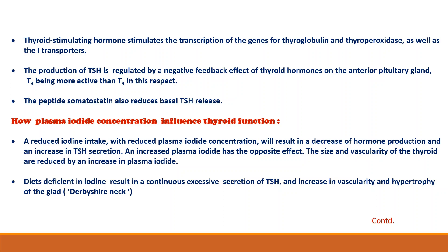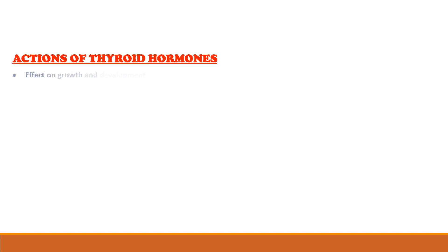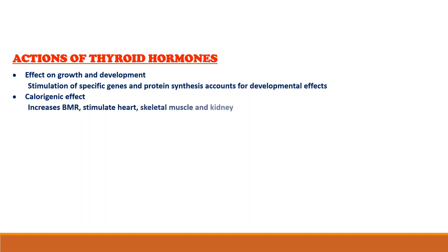This goiter is also called Derbyshire neck. Regarding the actions of thyroid hormones, the first and most important is the effects on growth and development. Thyroid hormones are required for normal growth and development of the fetus and infants. The stimulation of specific genes and protein synthesis accounts for the developmental effect. Neurotransmitters and biochemical processes of the CNS are also affected by thyroid hormones.